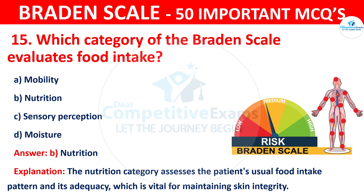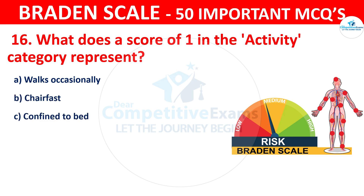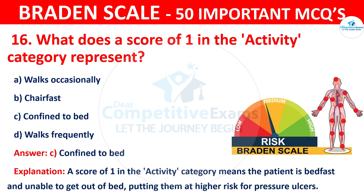Question number sixteen: What does a score of 1 in the activity category represent? Your options are walks occasionally, chairfast, confined to bed, or walks frequently. The correct answer is C — confined to bed. A score of 1 in the activity category means the patient is bedfast and unable to get out of bed, putting them at higher risk for pressure ulcers.